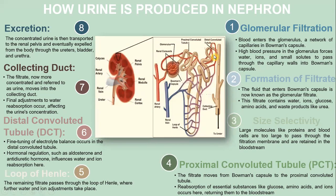Hormonal regulators such as aldosterone and antidiuretic hormone influence water and ion reabsorption at the distal convoluted tubule. Step seven: the collecting duct. The filtrate, now more concentrated, moves into the collecting duct, where final adjustments to water reabsorption affect urine concentration. Step eight: excretion. The concentrated urine is transported to the renal pelvis and eventually expelled from the body through the ureter, bladder, and urethra.